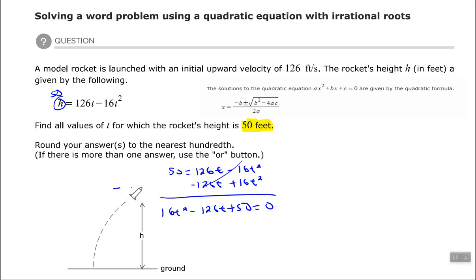Now that allows me to identify a, b, and c. With a, b, and c identified, I can substitute into the quadratic formula to find all the values of t.